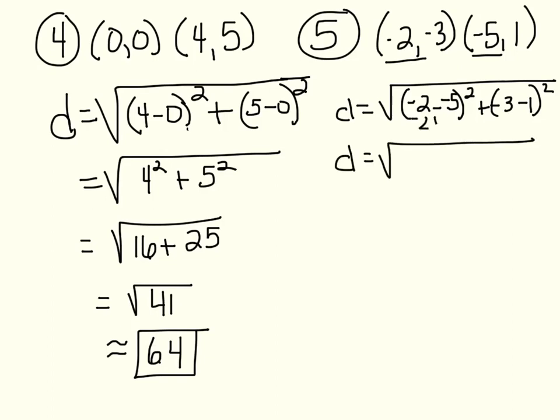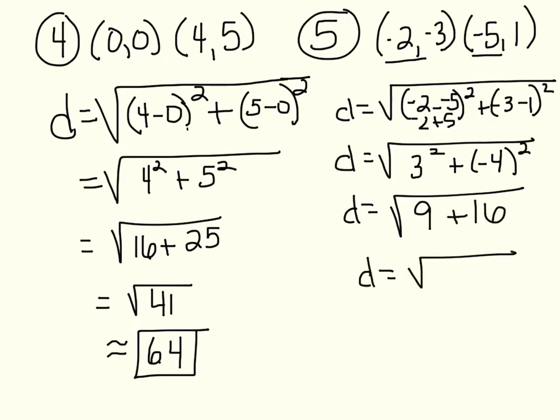Negative 2 plus 5, that's just 5 minus 2, that's 3 squared. Plus, negative 3 minus 1, that's negative 4 squared. Notice I'm using parentheses because there's a negative. That gives me 3 squared, which is 9. Negative 4 squared, which is 16. 9 plus 16 is 25. And the square root of 25 is 5. So the distance for number 5 is 5.